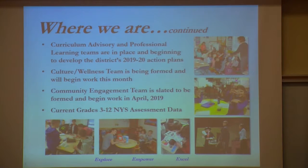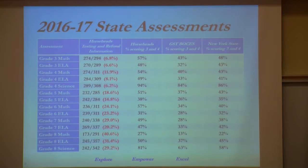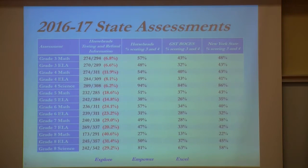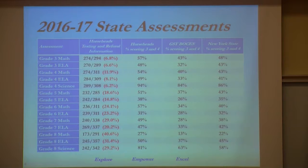We've been looking at grades 3 through 12 New York State assessments data, and we'll show you some of that tonight. The red in the data is our testing refusal percentage, which is important to know. Looking at 2016-17 State Assessments, you can see the percentage of proficiency at levels 3 and 4 compared to GST BOCES as well as the state. Pretty much across the board we're above all of GST BOCES, and the minimum we're above is plus 5%, roughly at our grade 5 area.